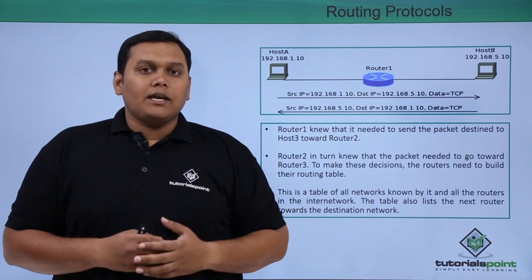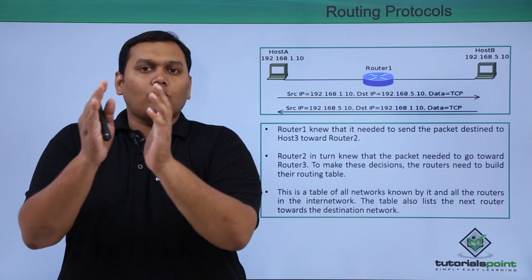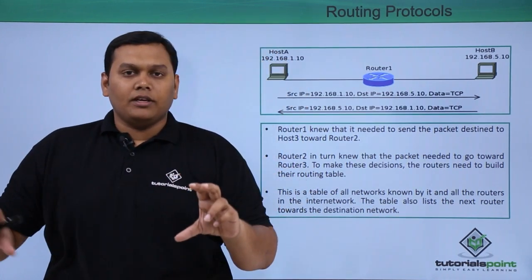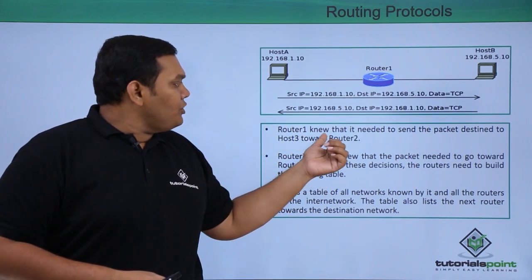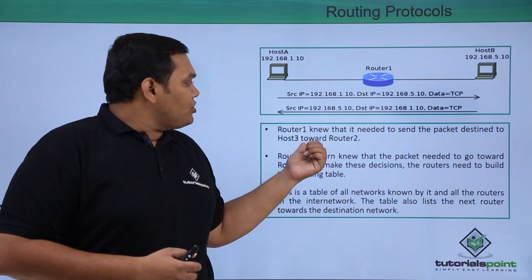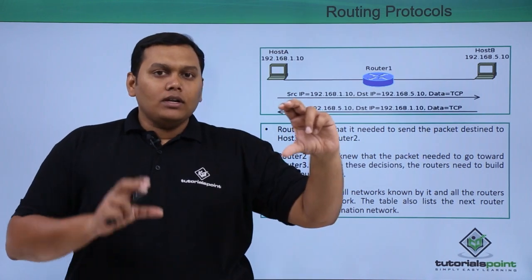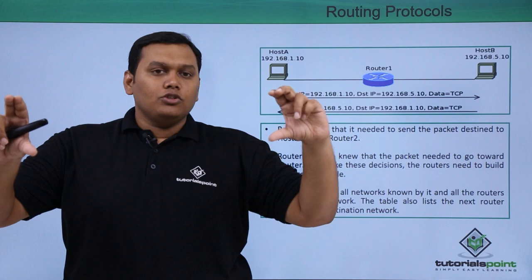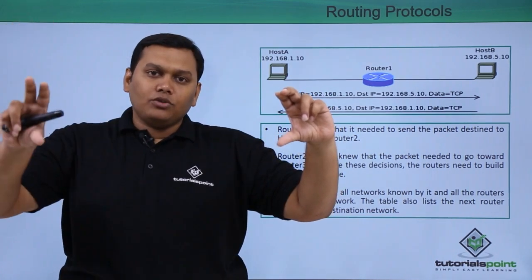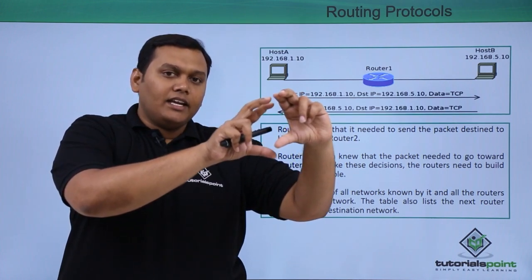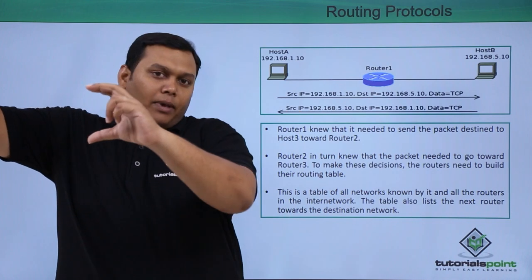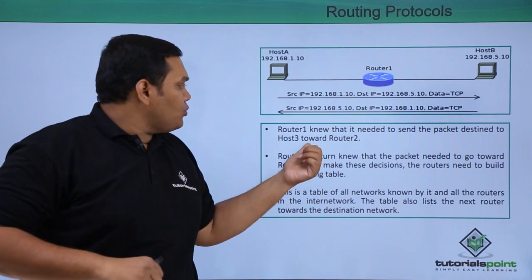You can also take a very good example of router 1, router 2, and router 3 — these are the mediums for host 1, host 2, and host 3. Router 1 knew that it needed to send the packet to the destined host 3 towards router 2. That means router 1 sends to router 2, and then router 3. So router 1 has to send to host 3, which is connected to router 3, and router 1 will send the information towards host 3 via router 2.